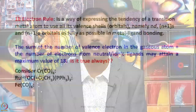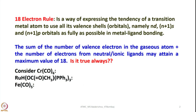The sum of the number of valence electrons in the gaseous metal atom plus the number of electrons donated by neutral or ionic ligands may attain a maximum value of 18. But is it really true that the 18 electron rule must be obeyed by all transition elements? Before answering that question, let us look at simple examples. Chromium hexacarbonyl: chromium has 6 electrons (3d⁵4s¹ or 3d⁴4s²), and 6 carbonyl groups donate 12 electrons, giving 18 total — so it obeys the 18 electron rule.